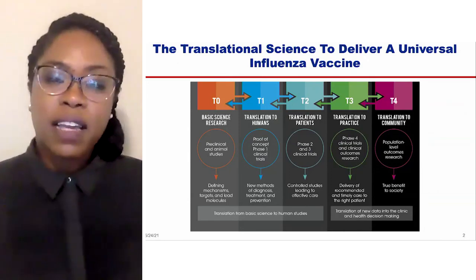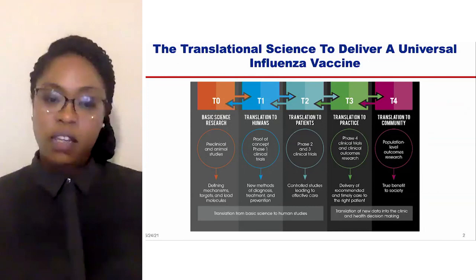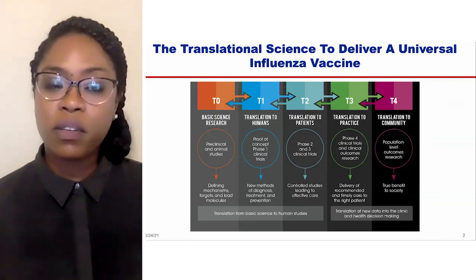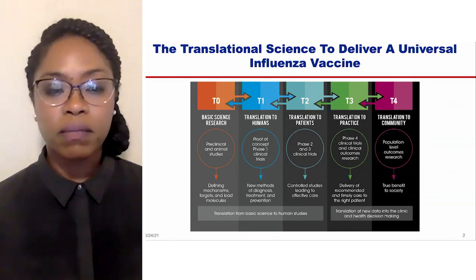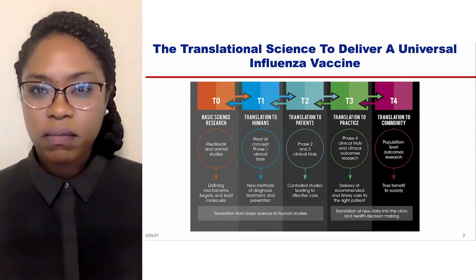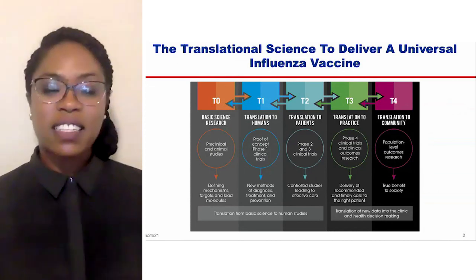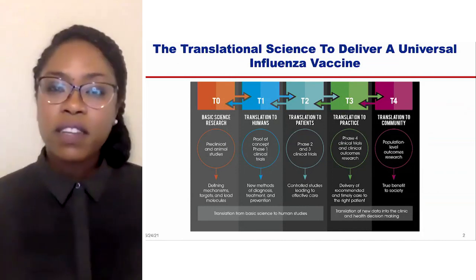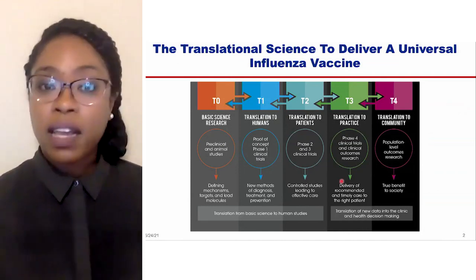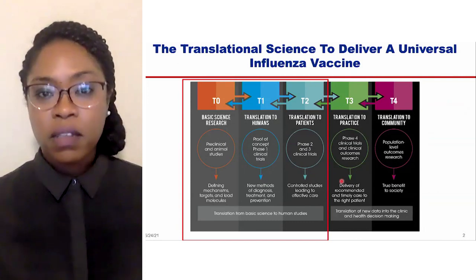The process of turning observations in the lab, the clinic, and the community into interventions or solutions that improve the health of individuals and the public at large is what translational science is all about. These solutions include vaccines that protect us against disease and prepare us to fight pandemics. This figure depicts the continuum of translational science. Today I'll use influenza as the case study and focus on the stages from T0 to T2, which is the translation from basic science to first-in-human studies.